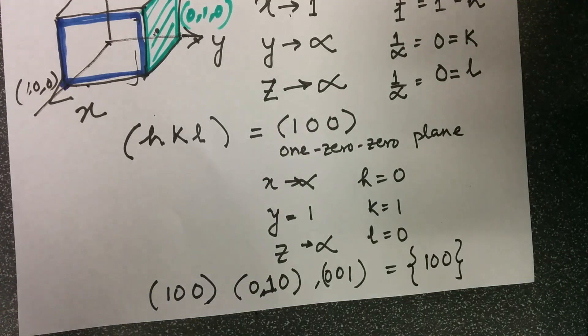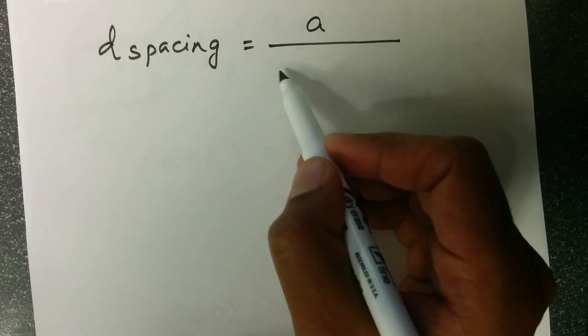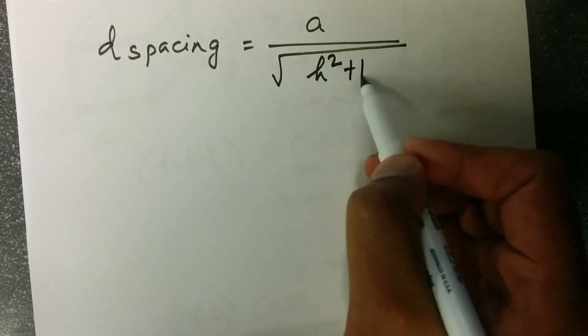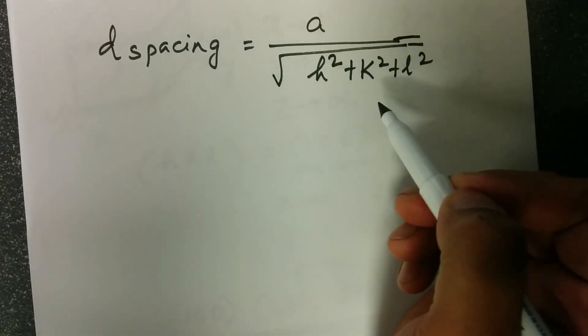The Miller indices are important for finding many concepts in material science and chemistry. One of them is the d-spacing or interplanar spacing between the parallel planes, which is defined as a, which is the side of cube, which differs for different material and which is generally in angstrom, divided by root over h² + k² + l², where h, k, l refer to the Miller indices.